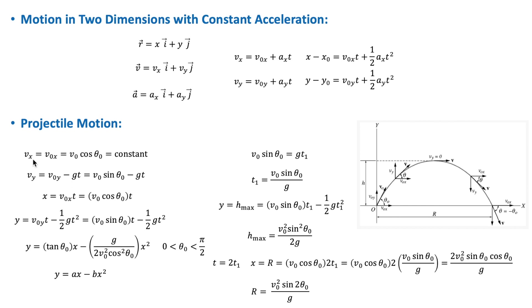The x component of the projectile's velocity is constant throughout the motion. The y component of velocity equals v₀ sin θ₀ − gt, varying just like free fall. The displacement along x equals v₀ cos θ₀ · t (constant velocity motion), and the displacement along y is given by the free-fall displacement equation.